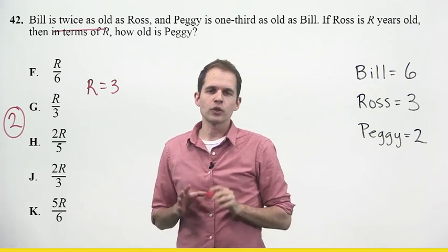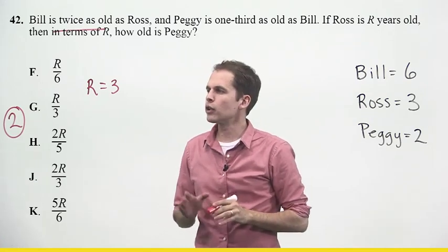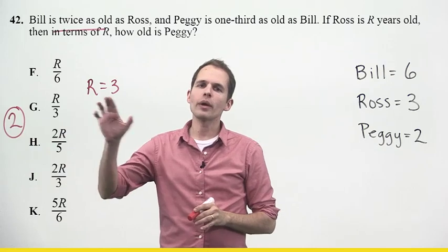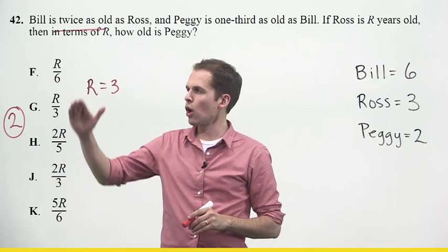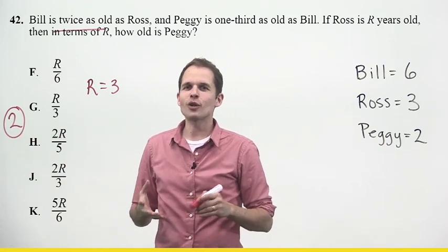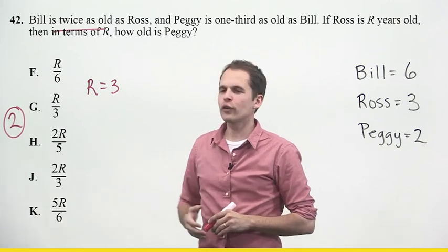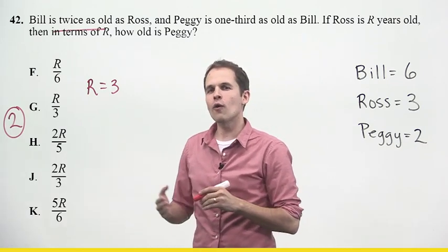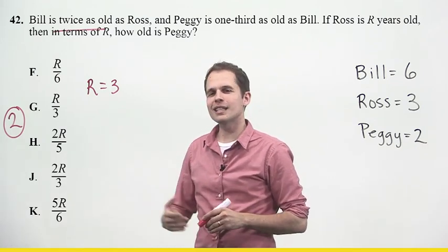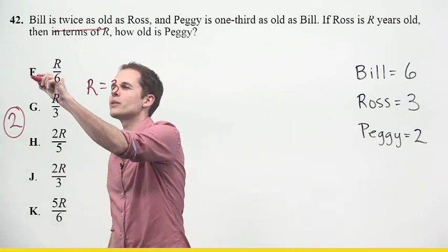So what I'm going to do now is this. I'm going to look for two knowing that r is three, and I'm going to go through all five answer choices. So I start with that first one. It says r over six. That would be three over six. Is three over six the same thing as two? Well, no. So this can't be right.